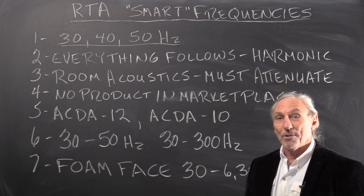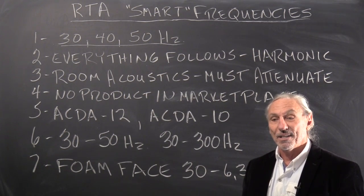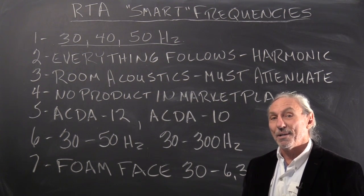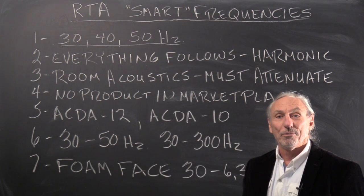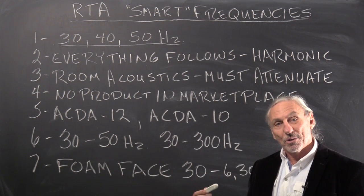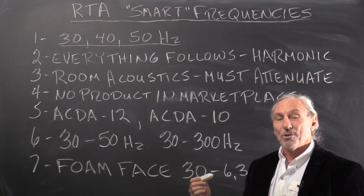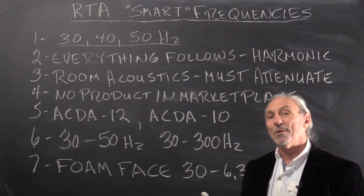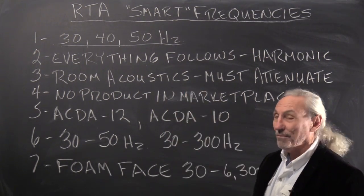It means we must go after those three frequencies with a vengeance, because those are the starting point of all of our problems in all small rooms. So we must go after them in terms of attenuation and absorption. Any product that we use in the room must have that 30, 40, 50 cycle paradigm in its design parameters.